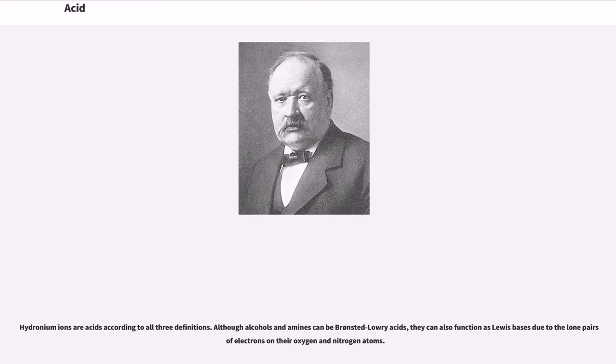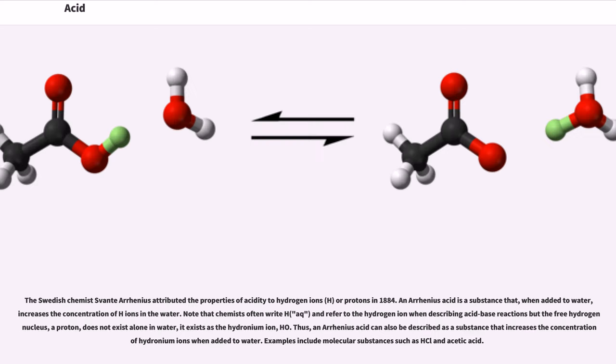Hydronium ions are acids according to all three definitions. Although alcohols and amines can be Brønsted-Lowry acids, they can also function as Lewis bases due to the lone pairs of electrons on their oxygen and nitrogen atoms. The Swedish chemist Svante Arrhenius attributed the properties of acidity to hydrogen ions (H+) or protons in 1884.